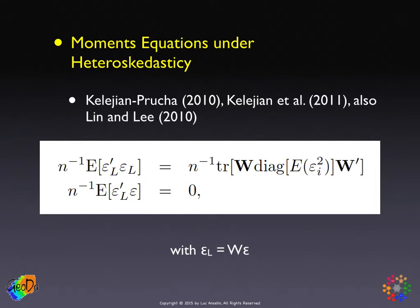The first equation is a little bit more complicated, but again you see this trace operator there. Because we allow for heteroscedasticity, we have the individual variances of the error terms in the term E epsilon_i squared. So the point of departure is to come up with some moment conditions, and then we'll simplify the notation so we don't have to drag these complex expressions around. Then we will replace these error terms that we actually don't observe by the residuals in the regression model and solve the moment equation.